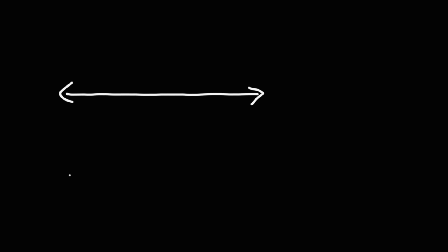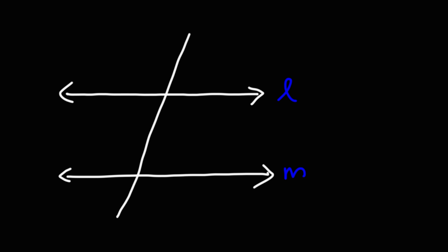In this video, we're going to talk about corresponding angles and same-side interior angles. So let's say we have two parallel lines. I'm going to call this line L and line M. And we have a transversal line that cuts through line L and line M. Let's call this T.